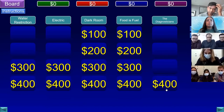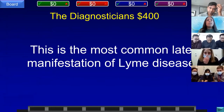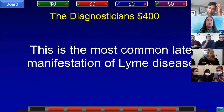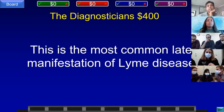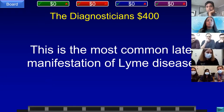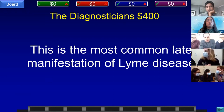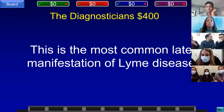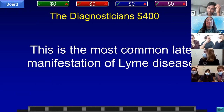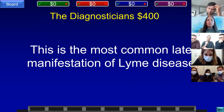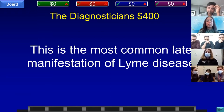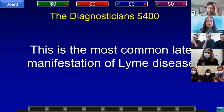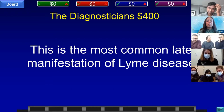Diagnosticians for 400. This is the most common late manifestation of Lyme disease. Teams D, E, and C answered complete heart block, conduction abnormalities, and Lyme carditis, respectively — all incorrect. Team B, Mount Sinai buzzed in and answered: what is arthritis? That is correct.